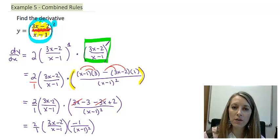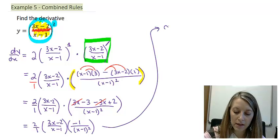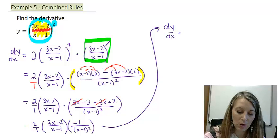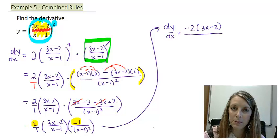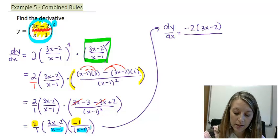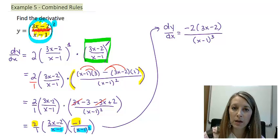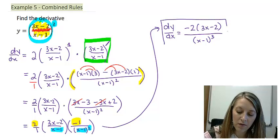We've simplified each individual piece, but now it's time to look at it as one big unit. When we multiply fractions, we multiply straight across, so I multiply 2 times negative 1 to give me negative 2 times (3x minus 2) — and factored form is best. In my denominator, I have (x minus 1) times (x minus 1) squared, which means I really have 3 of these (x minus 1), so my denominator is best written as (x minus 1) to the third. This gives me the derivative of this function.